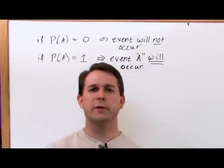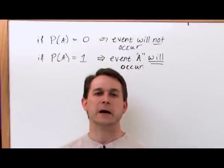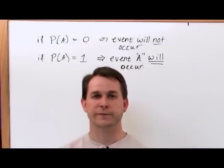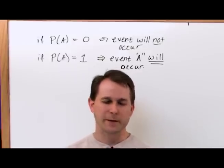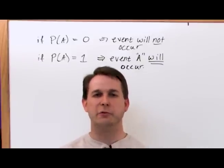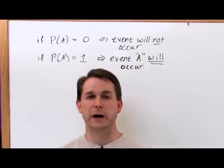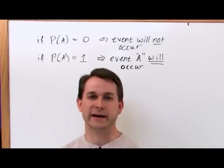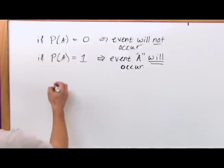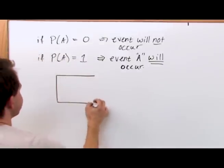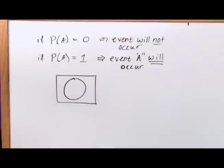When talking about probabilities of events, they're always between zero and one. A lot of times when we're trying to visualize what's going on, we use what's called a Venn diagram. It's a complicated-sounding name but basically it's just a picture trying to describe the event space — very useful when talking about more than one event at a time. A Venn diagram is simply a rectangle with a circle inside.